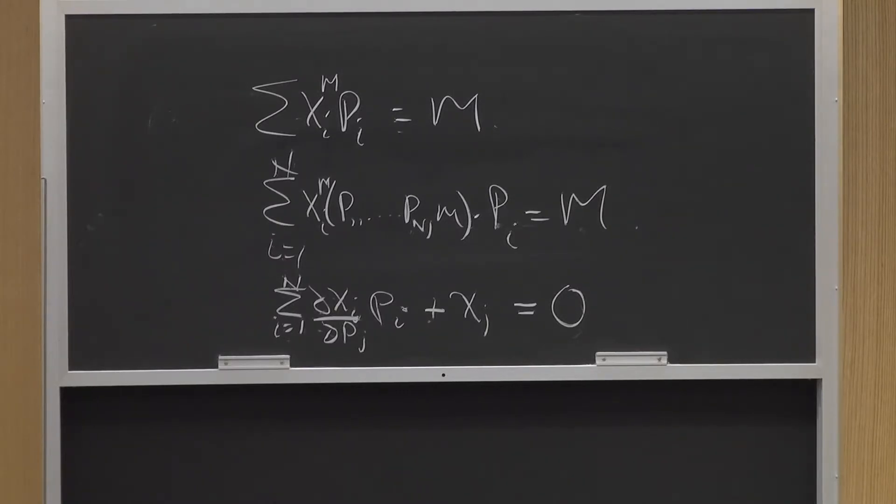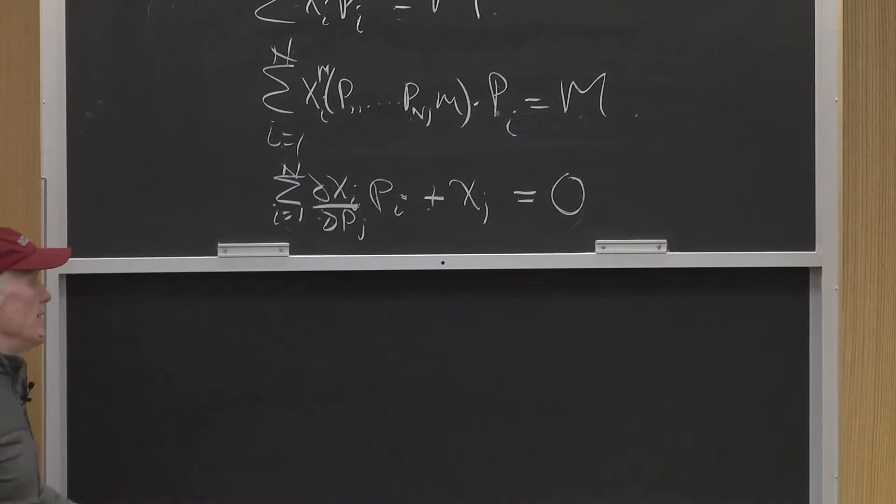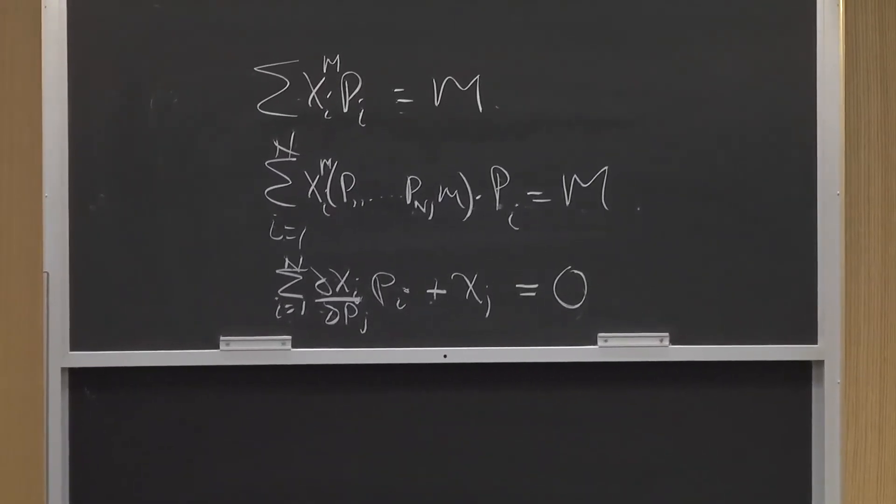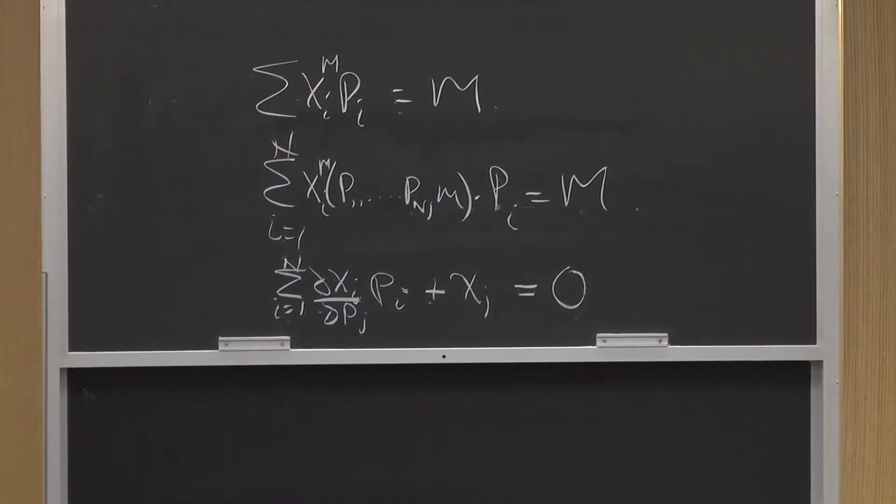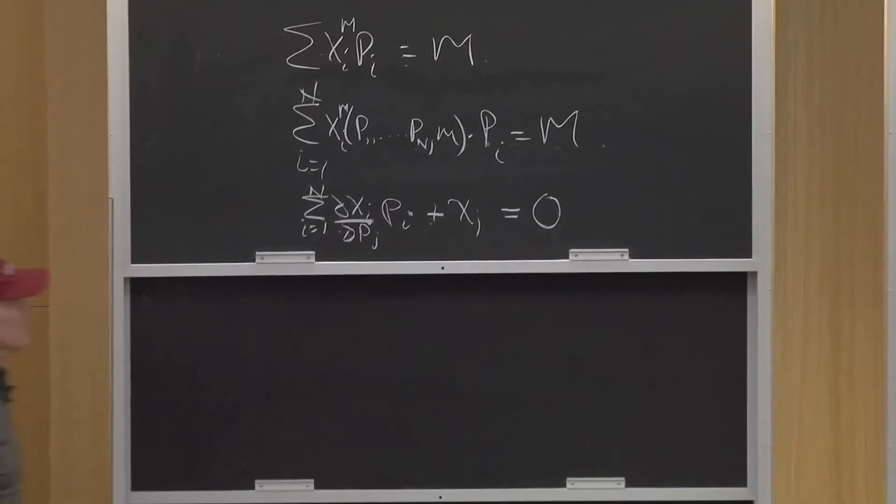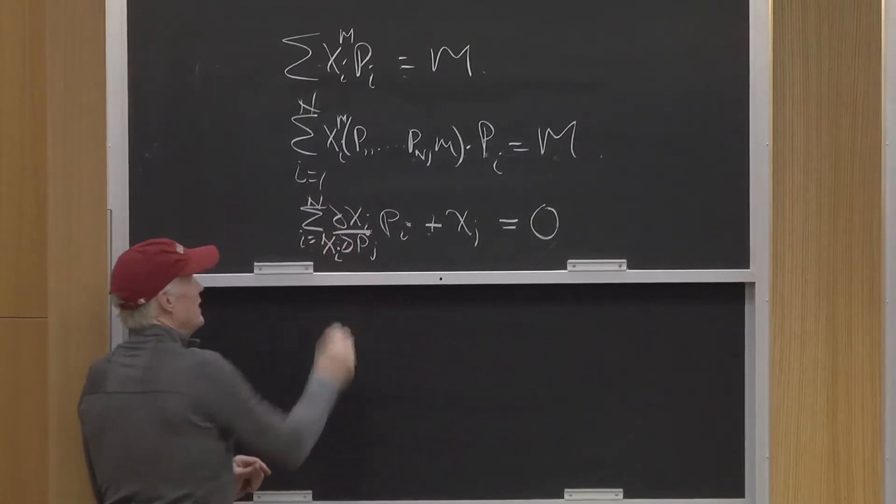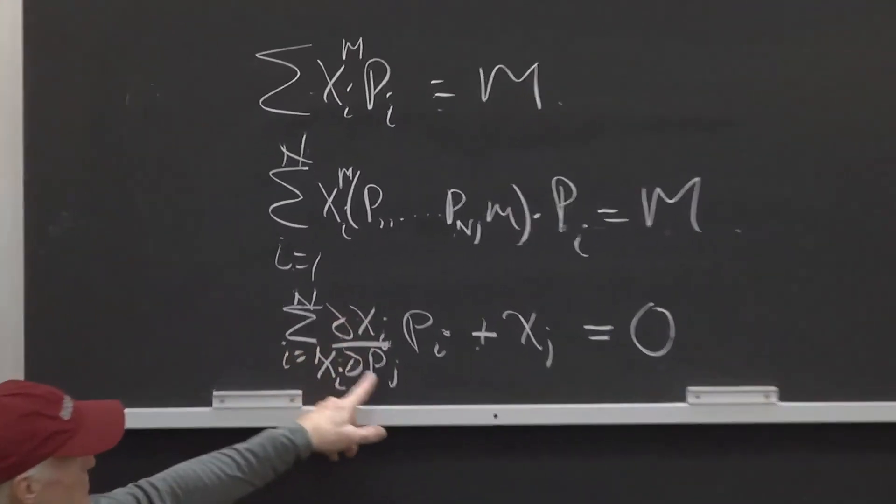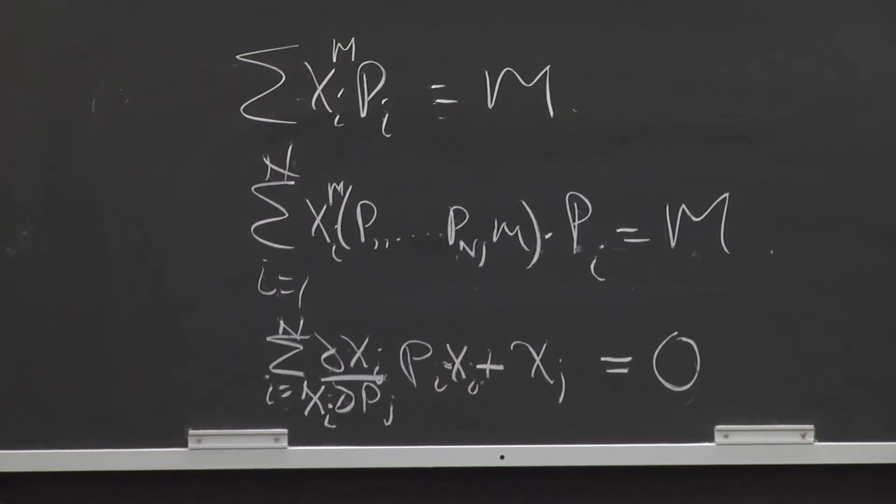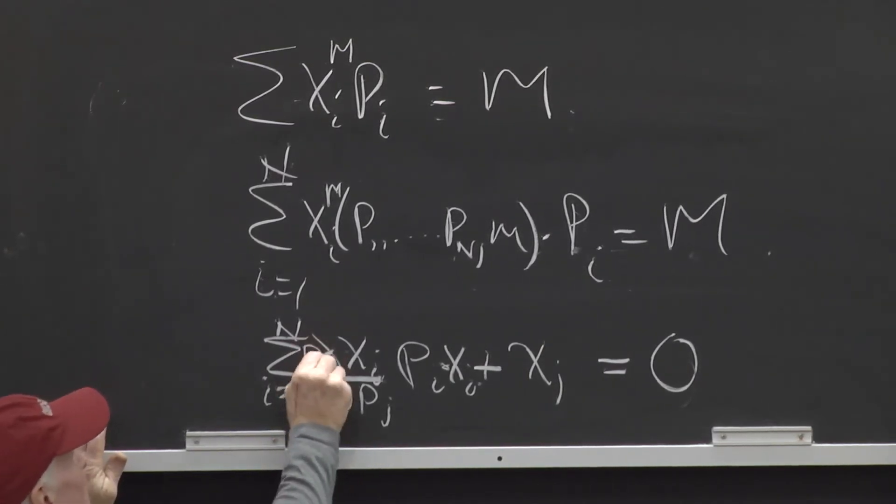So now we can make this into elasticities. How do I make it into elasticities? I need an xi here because I got partial xi, partial pj. I need an xi there. So I'll put one here. That balances. Then I need a pj. So I'll put a pj here and I'll put one here.